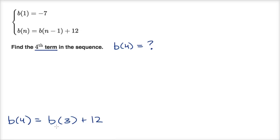To evaluate this, we have to figure out what b(3) is. That's what's fun about a recursive definition—you have to keep recursing backwards.